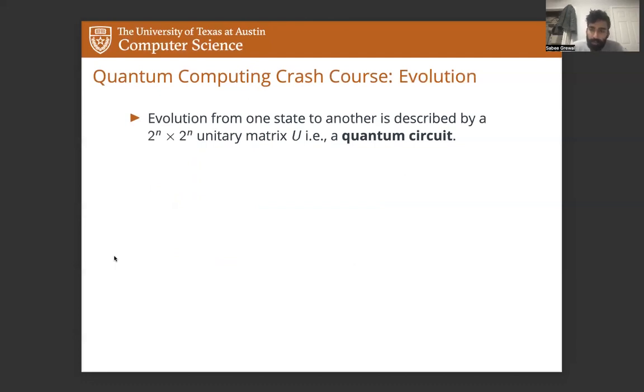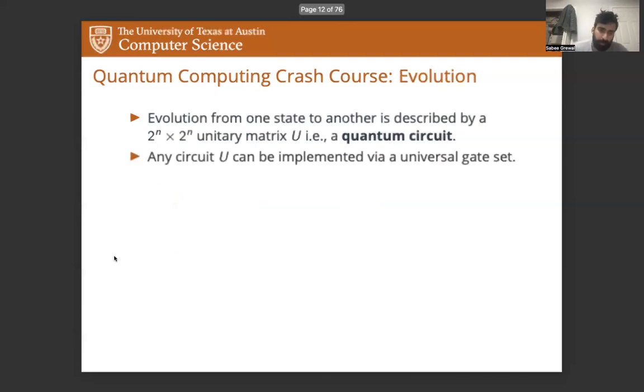Evolution from one state to another is described by a 2 to the n by 2 to the n unitary matrix, the quantum circuit. And any quantum circuit can be implemented with a universal gate set. Just like a Boolean function can be implemented with AND or NOT gates, there are also many quantum gate sets that are universal that can implement a general quantum circuit U.